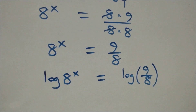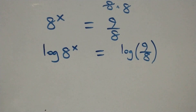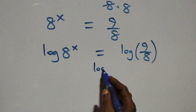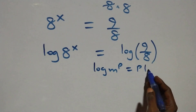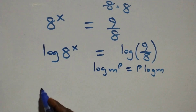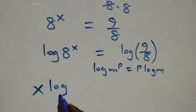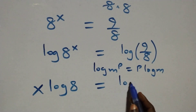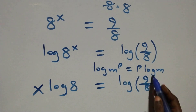Here we apply the power rule of logarithms. We have log m raised to power p, which is the same thing as p times log m. Applying this, we have x times log 8 equals log of 9 over 8.